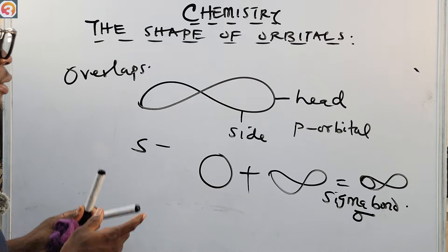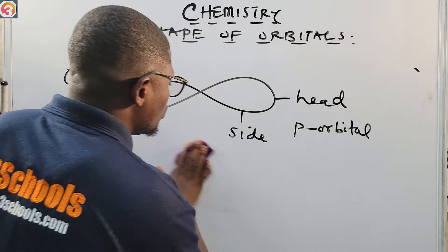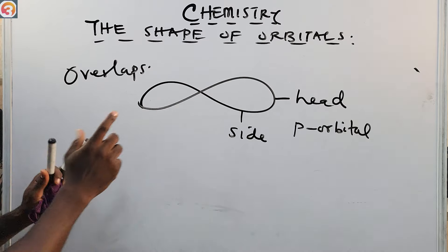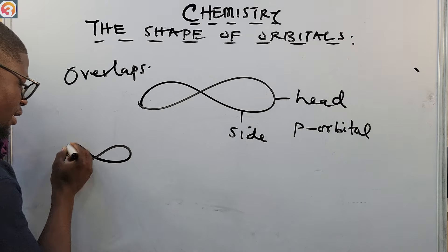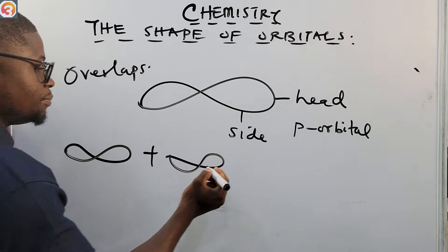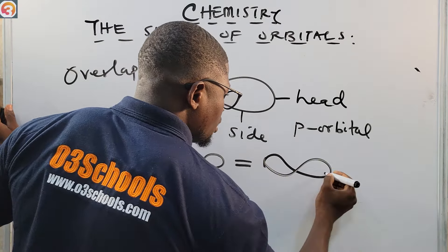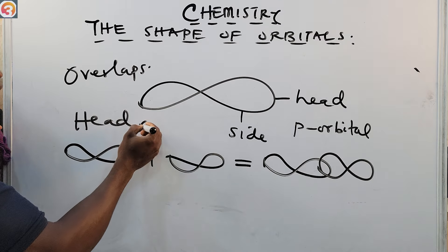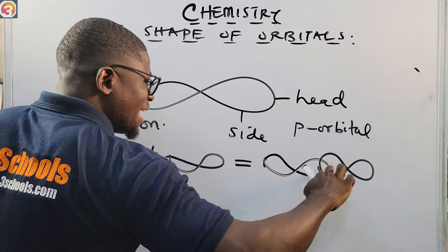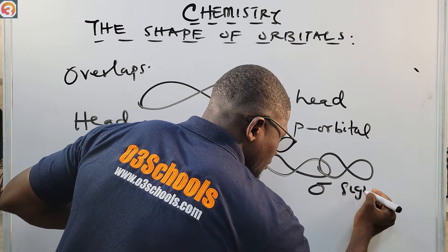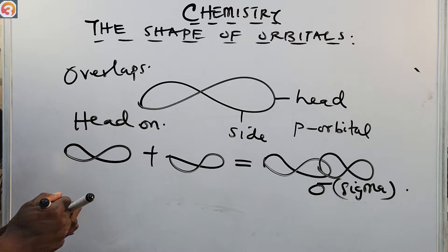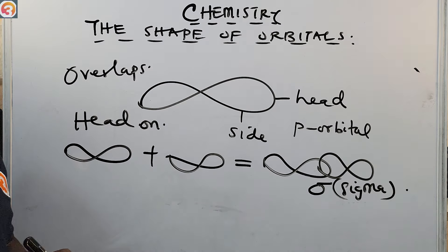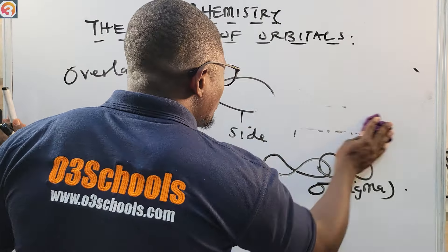A sigma bond can also be formed when two P orbitals overlap head-on. When the two P orbitals overlap head-on — that is, head to head — a sigma bond is formed.